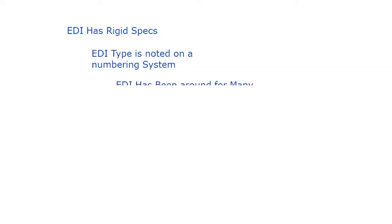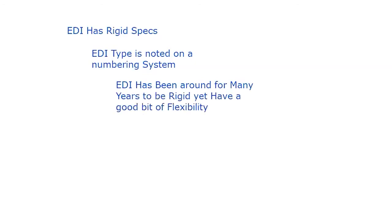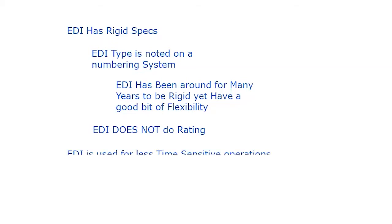EDI has been around for many years, which makes it very rigid with all the specifications, but it does have a good bit of flexibility — such as the 204, which is actually a warehouse order but can also be used to tender freight or dispatch freight to a carrier. It is, however, very rigid in what you can and can't do. EDI doesn't do rating, because rating usually means you need an answer back in a much quicker time than EDI can provide. EDI is used for less time-sensitive operations. If you're trying to find out shipping time on Amazon, they're not using EDI because it doesn't work in that kind of time-sensitive environment. It works well with a 30-minute, one-hour, or two-hour window, but when you have a one-minute window, EDI is probably not the tool you're going to use.